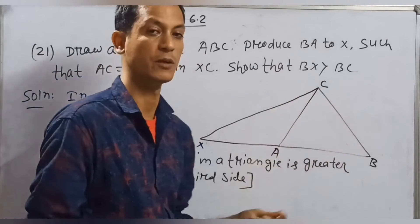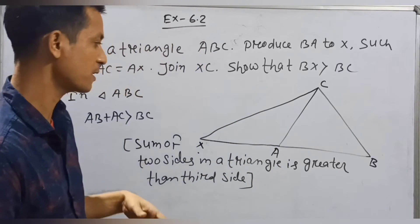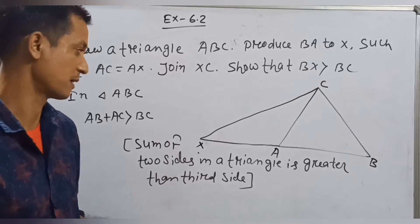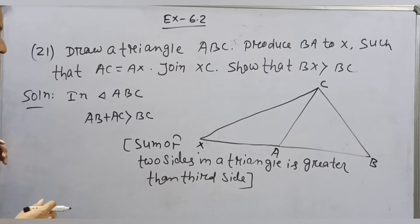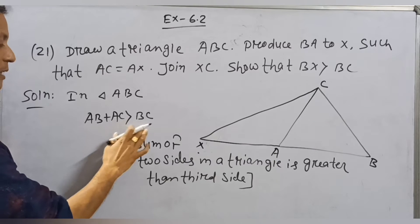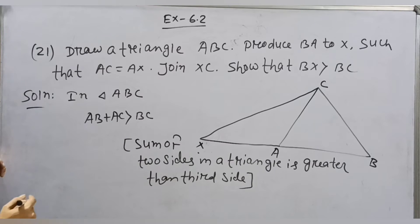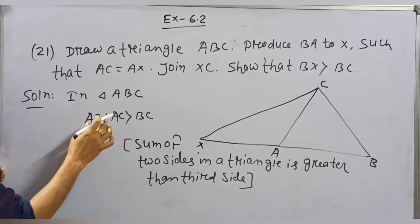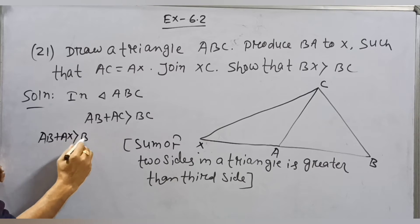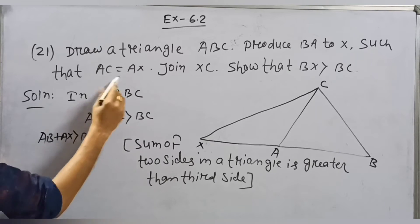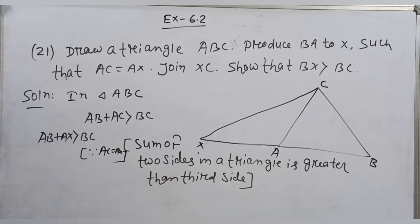In triangle ABC, any two sides are greater than the third side. I have taken AB plus AC. Since AC is equal to AX, we can write AB plus AX is greater than BC.